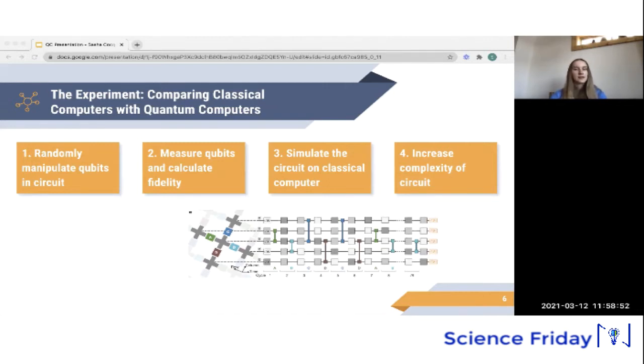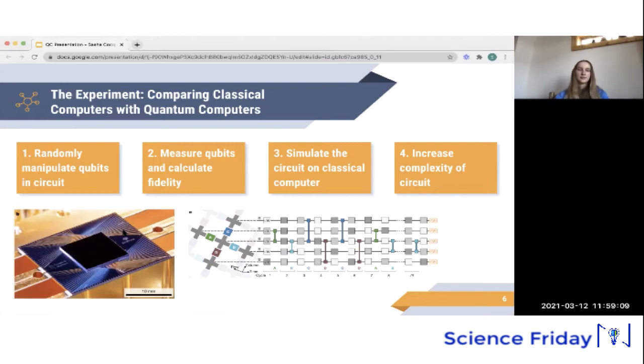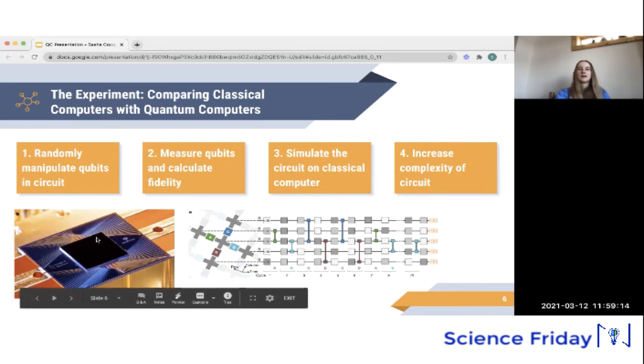So these orange rectangles at the end of the circuit here, they represent measurement and that's what they did after all this manipulation. They then simulated the same task on a classical computer so they could compare the times between the classical and quantum computers. And then they repeated this process with greater complexity by either increasing the number of qubits or increasing the complexity of the manipulation. Eventually, they reached a point where the quantum computer could accomplish the task in 200 seconds, while they predicted the best classical computer would take 10,000 years. And that is a big deal. For reference, here is a photo of the sycamore processor. It's pretty small, only one centimeter, and it does look pretty cool.